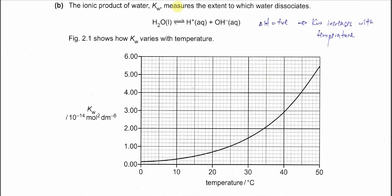Part B: The ionic product of water, Kw, measures the extent which water dissociates. This is the auto-ionization of water to form hydrogen ion and hydroxide. From Figure 2.1, we know that when temperature increases, Kw also increases, showing that this ionization is endothermic.